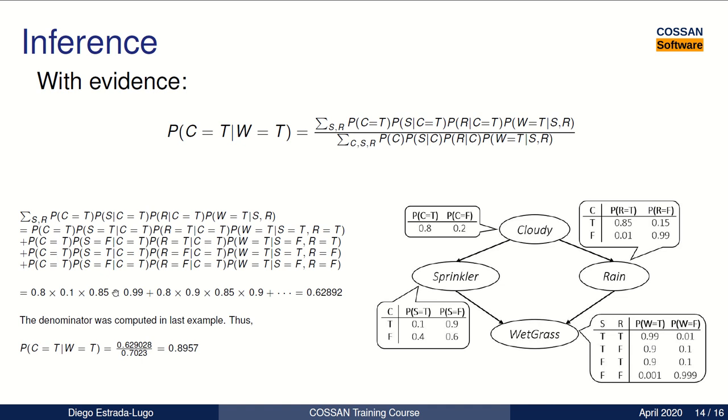And then we marginalize out S and R. And then we substitute the probabilities of each of our variables here. And then we get the probability of our prior. And then we only have to divide by the probability of the evidence. In this case, the evidence is that the wet grass is true. And this was calculated before in the previous example. And then at the end, we can get our posterior distribution. So there is a probability of 0.89 of being cloudy, given that we already observed that the grass is wet.